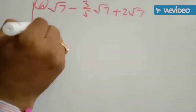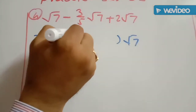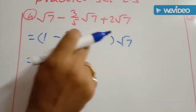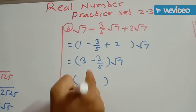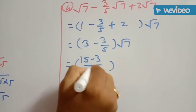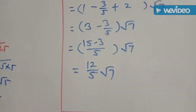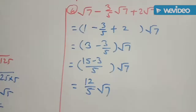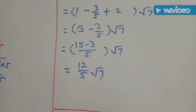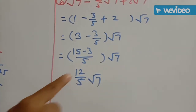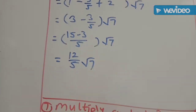Fourth example: from all three terms, root of 7 gets common. Remaining is 1 minus 3/5 plus 2. So 1 plus 2 equals 3, giving 3 minus 3/5. By taking cross multiplication for same denominator: 15/5 minus 3/5 equals 12/5. So the answer is 12/5 root of 7.